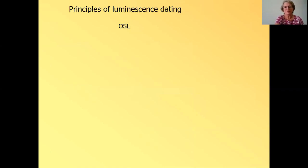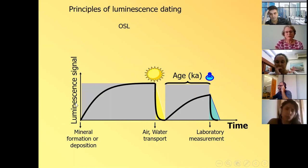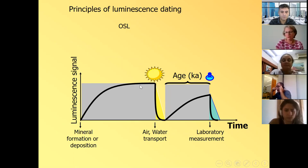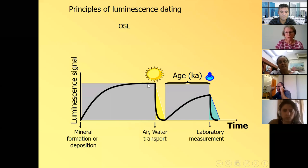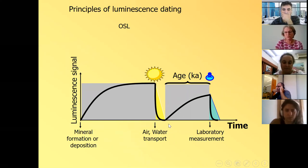So let's start with the principles of luminescence dating, and I'll talk about OSL, but it's actually relevant to all the other luminescence signals. So we have a, this is time, the x-axis, and this is luminescence signal. And we have a, say, a quartz grain sitting in some sandstone or some granite. And the luminescence signal starts growing from the beginning, and it grows until it cannot grow anymore, a situation that we call saturation.